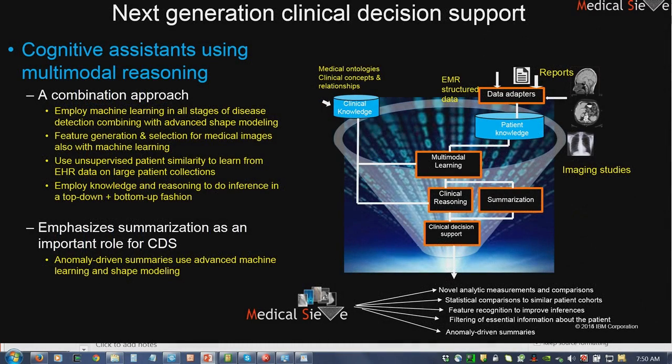So those are the different techniques in clinical decision support: inference-based approaches, machine learning approaches, and patient similarity — which also uses machine learning to develop similarity techniques. Those are the spectrums. So where are we going next?